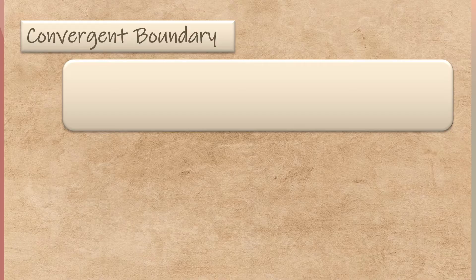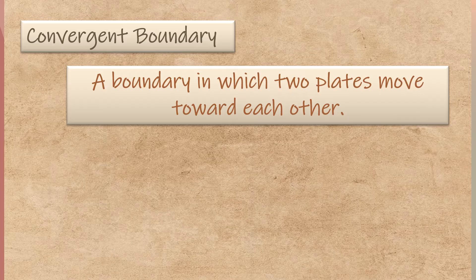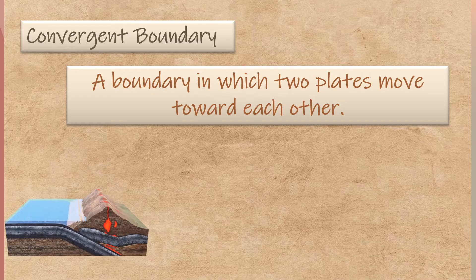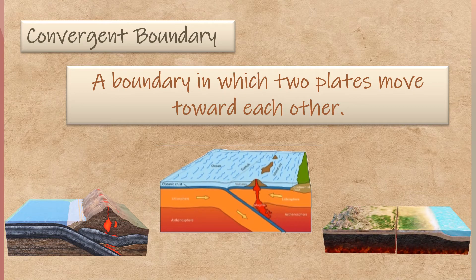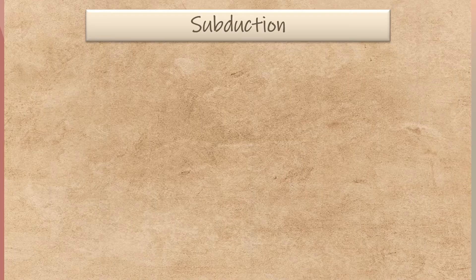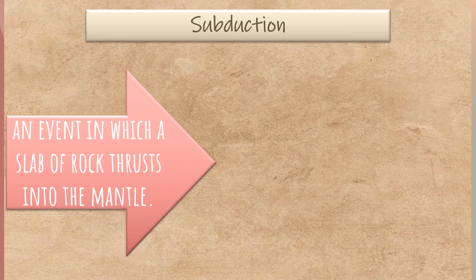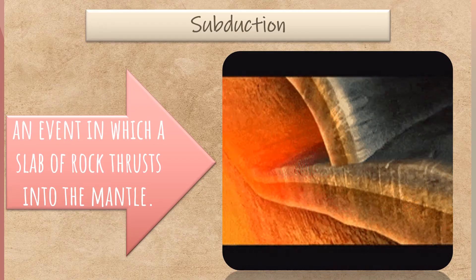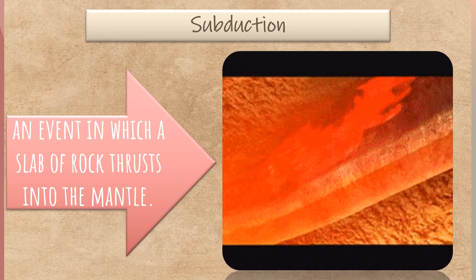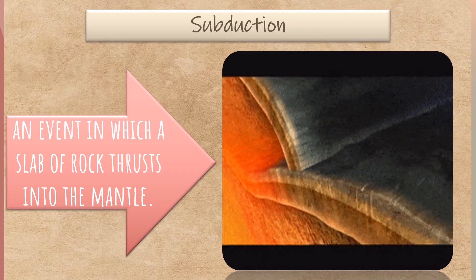Convergent boundary is the second type of plate boundary. It is a boundary in which two plates move toward each other. This boundary has three types: oceanic-continental plate boundary, two oceanic plate boundary, and two continental plate boundary. Before we proceed with the three types, let us discuss subduction — an event in which a slab of rock thrusts into the mantle. The denser oceanic crust undergoes the process of subduction, or the bending of the crust towards the mantle.